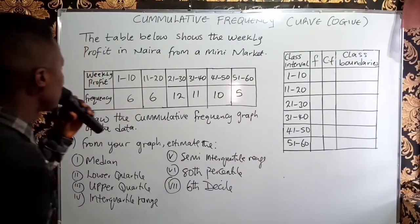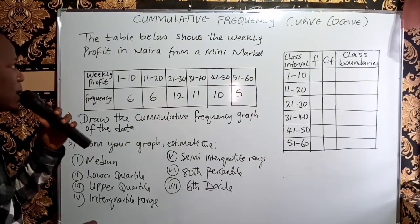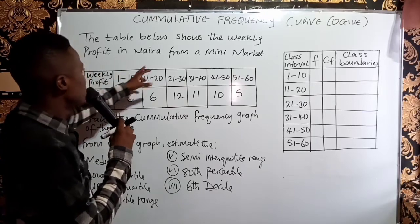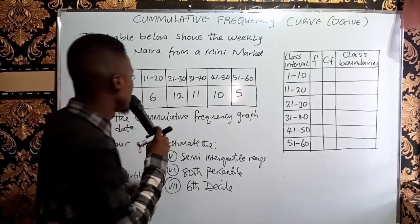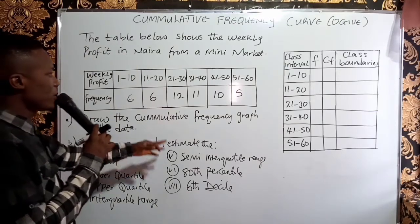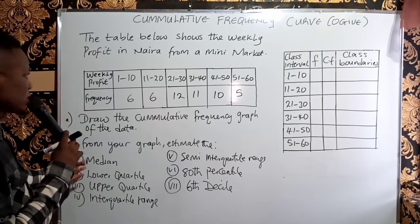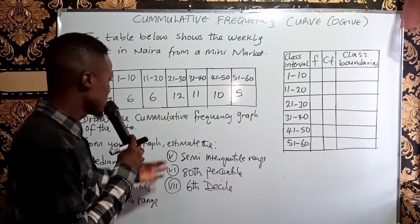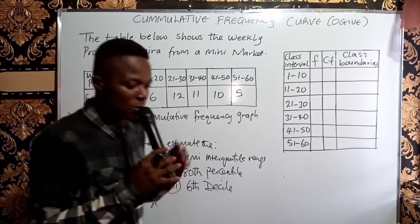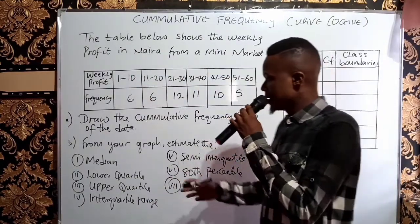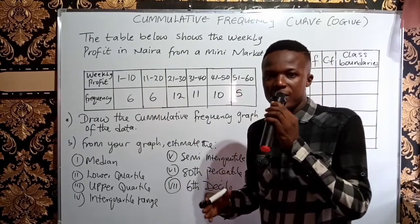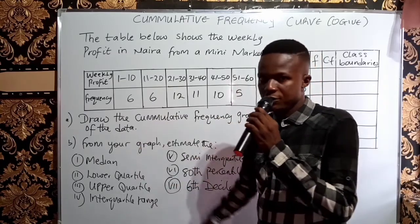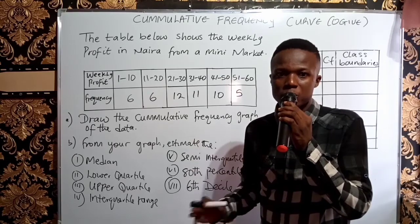We are told that the table below shows the weekly profit in Naira from a minimarket. You can see the weekly profit from 1 to 10, 11 to 20, and the corresponding frequency. We are asked to draw the cumulative frequency graph of the data, then estimate the median, the lower quartile, the upper quartile, the interquartile range, semi-interquartile range, 80th percentile, and 6th decile. Nobody will ask you all these at once; they might pick two or three. That is why I deemed it fit to discuss all of them.